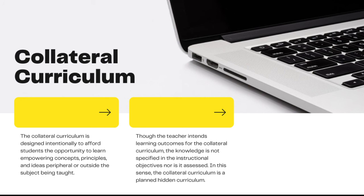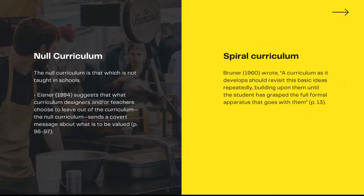Collateral curriculum is designed intentionally to afford students the opportunity to learn empowering concepts, principles, and ideas peripheral or outside the subject taught. Though the teacher intends learning outcomes for the collateral curriculum, the knowledge is not specified in instructional objectives nor is it assessed. The collateral curriculum is a planned, hidden curriculum. Null curriculum is what is not taught in school. Eisner in 1994 suggests that what curriculum designers and or teachers choose to leave out of the curriculum sends a covert message about what is to be valued.